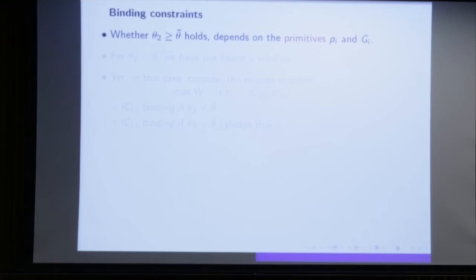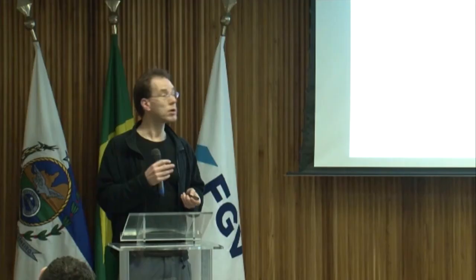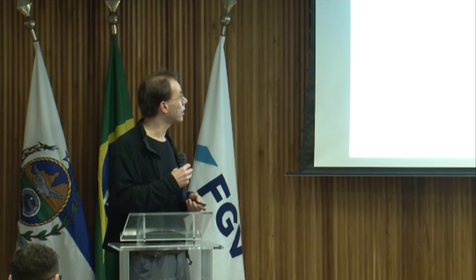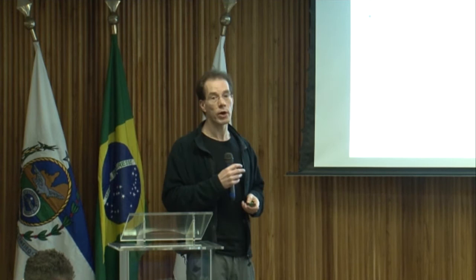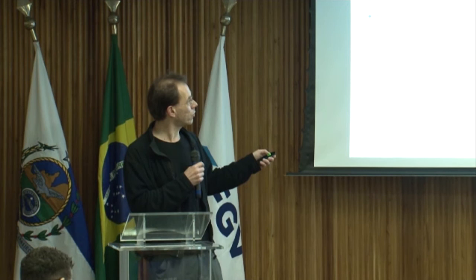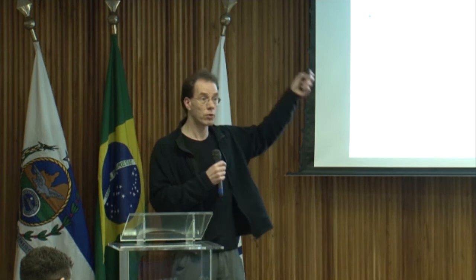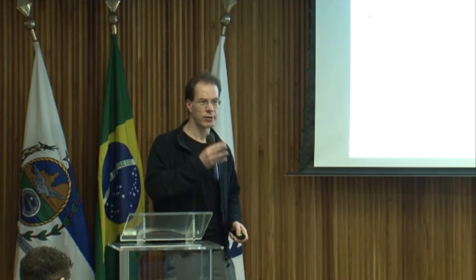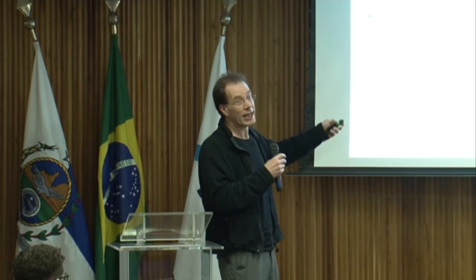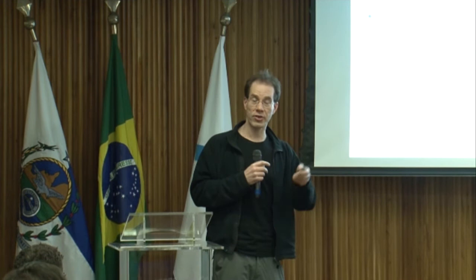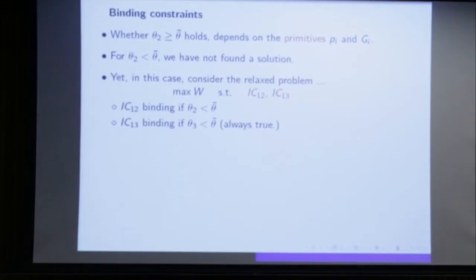It could also go the other way — if theta_2 is smaller than the average theta-bar, I have a different problem. Then I should not have replaced IC(2,3) but instead should have replaced IC(1,2) with IC(1,3). Doing the whole analysis again gives monotonicity again under the condition that IC(1,3) is really binding. So depending on the distributions, I have to take different sets of incentive constraints.